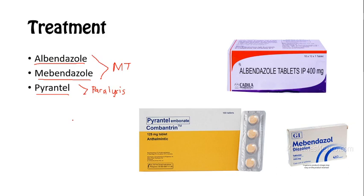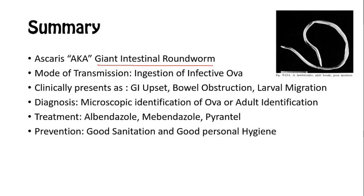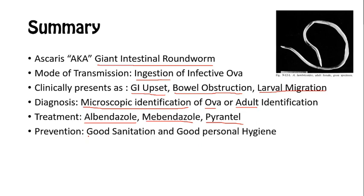However, this can be prevented with good sanitation practices and good personal hygiene. To summarize: Ascaris is also known as the giant intestinal roundworm. Its mode of transmission is through ingestion via the fecal-oral route. It is found in developing countries with poor sanitation. It clinically presents as GI upset, bowel obstruction, larval migration, and many more. Its diagnosis relies on ova or adult identification, and its treatment is albendazole, mebendazole, and pyrantel. And this can, of course, be prevented with good personal hygiene and good sanitation practices.